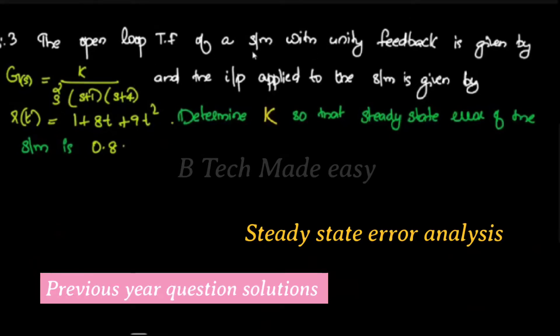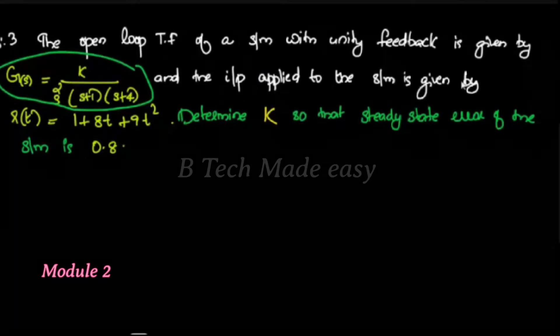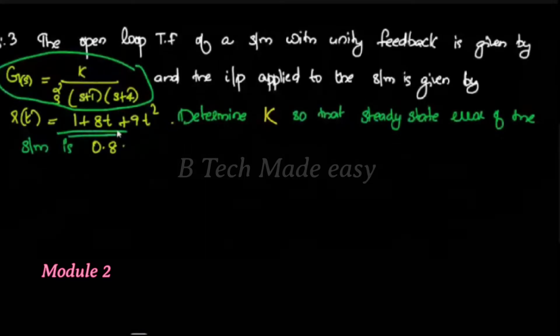The open loop transfer function of a system with unity feedback is given by a G(s) value, and the input applied to the system is given. Here are three combinations of input.